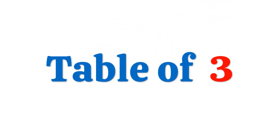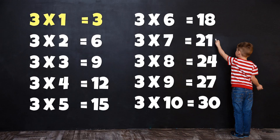Table of 3: 3 times 1 is 3, 3 times 2 is 6, 3 times 3 is 9, 3 times 4 is 12, 3 times 5 is 15, 3 times 6 is 18, 3 times 7 is 21, 3 times 8 is 24, 3 times 9 is 27, 3 times 10 is 30.